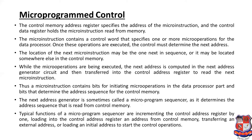The control memory address register specifies the address of the micro instruction. While the micro operations are being executed, the next address is computed in a next address generator circuit and then transferred into the control address register to read the next micro instruction. In the organization of the micro program control unit, the control memory is permanent memory, and the micro instruction is stored and addressed via the control address register.